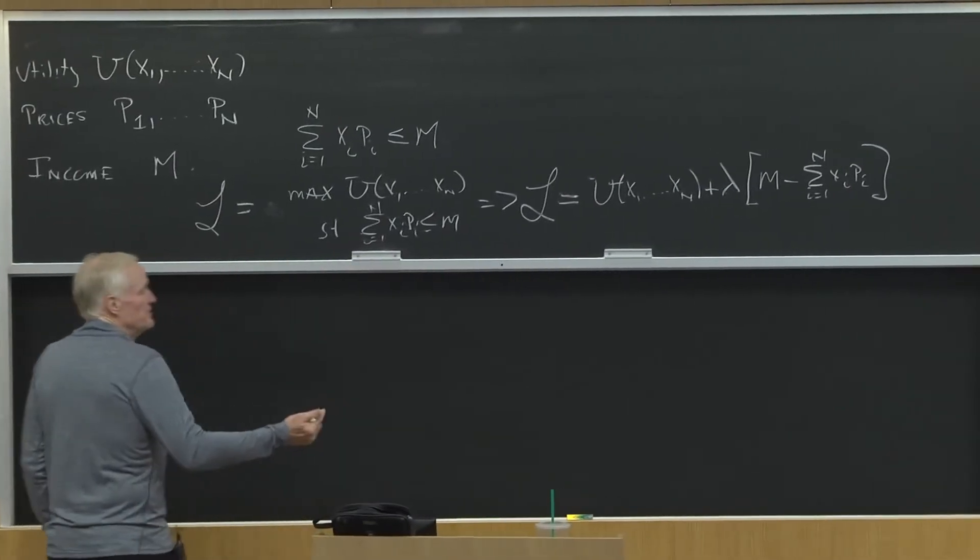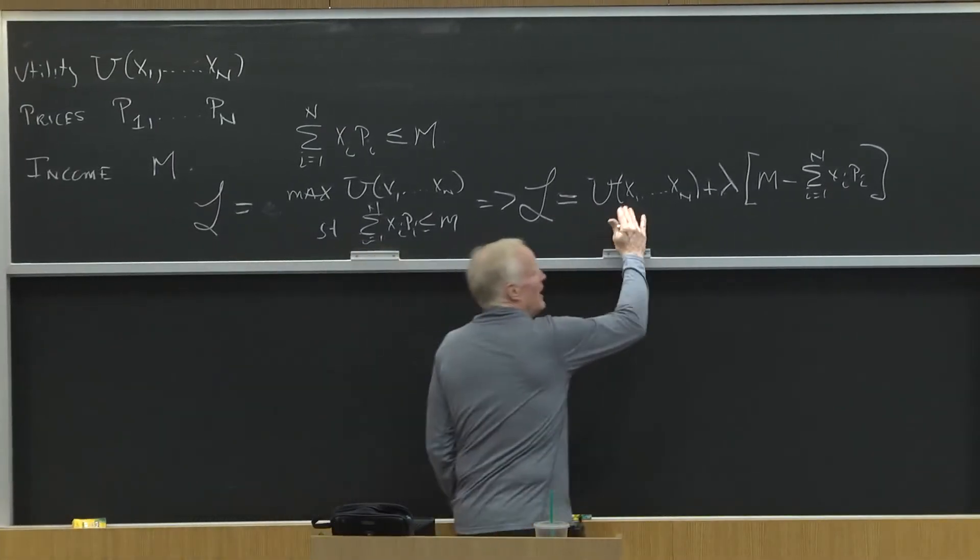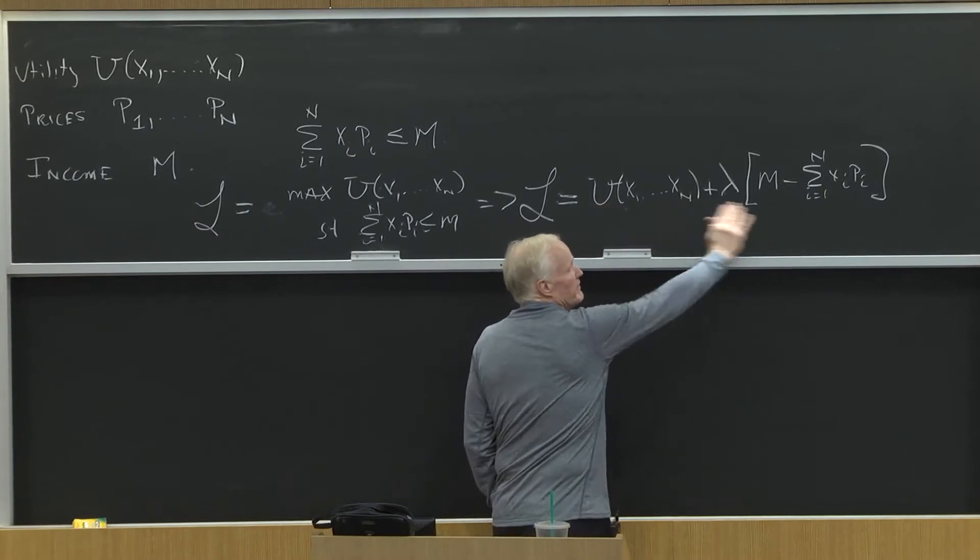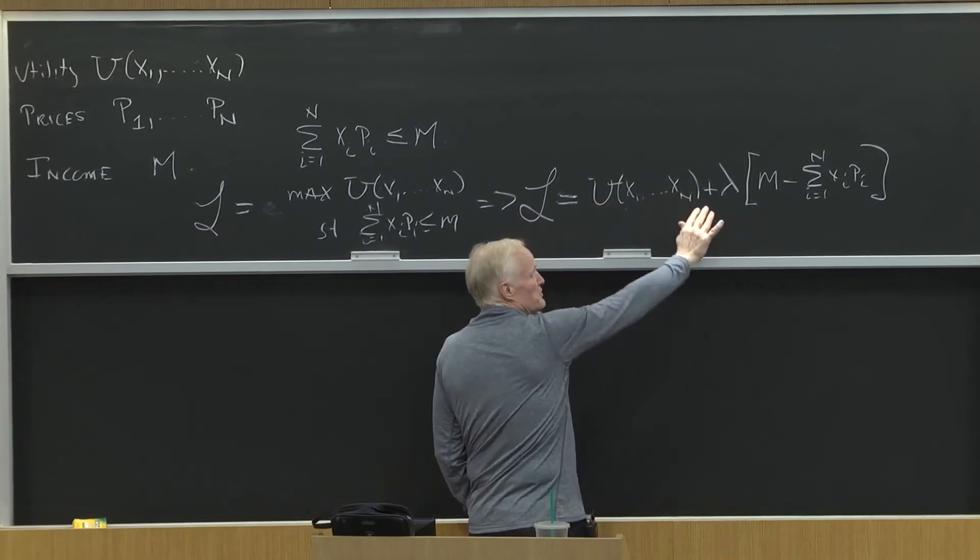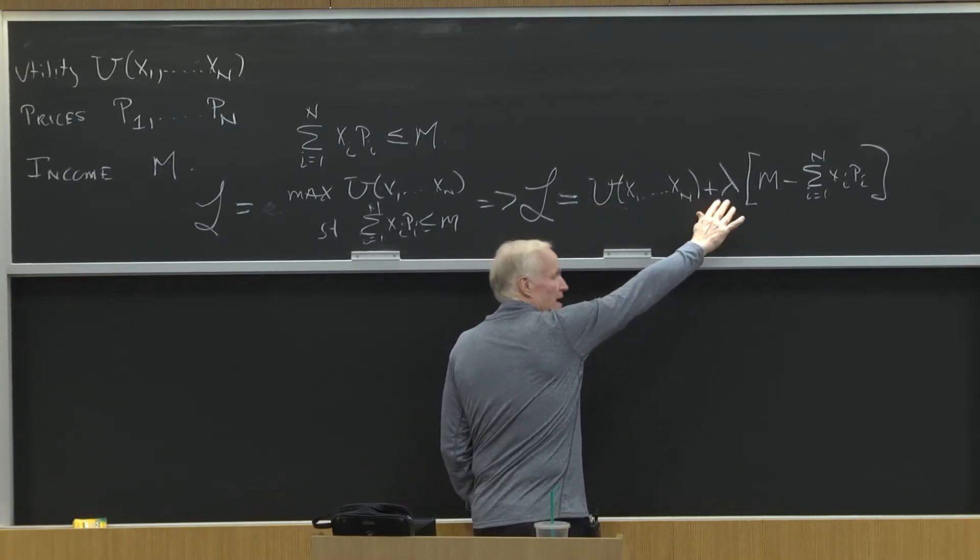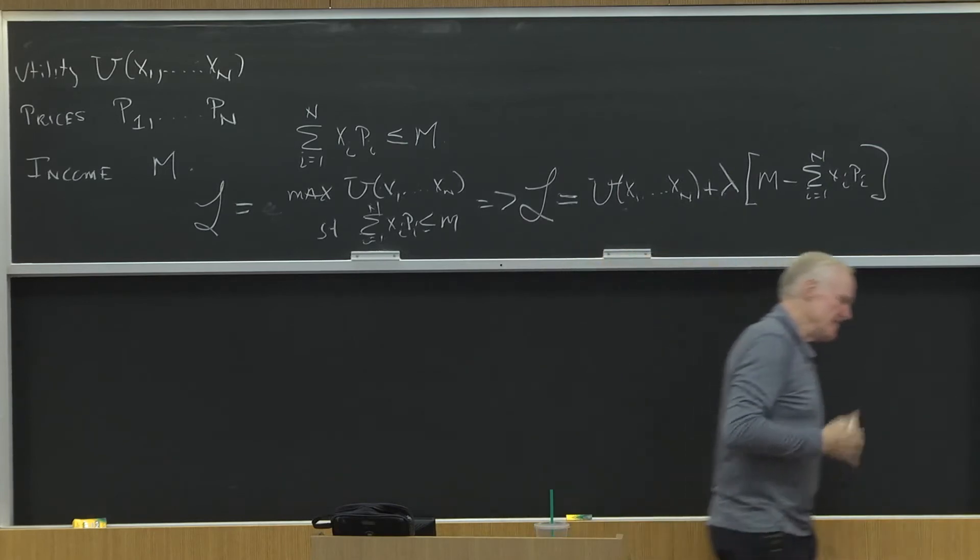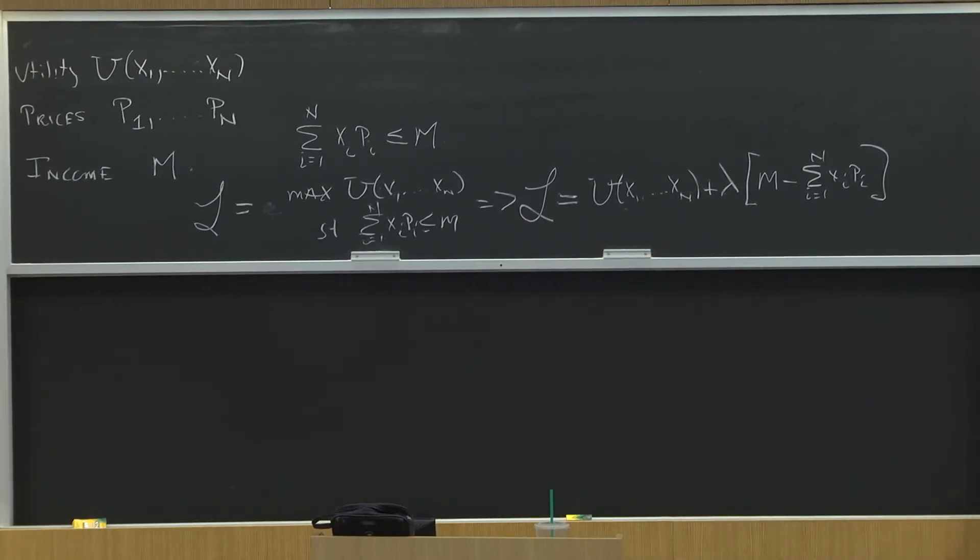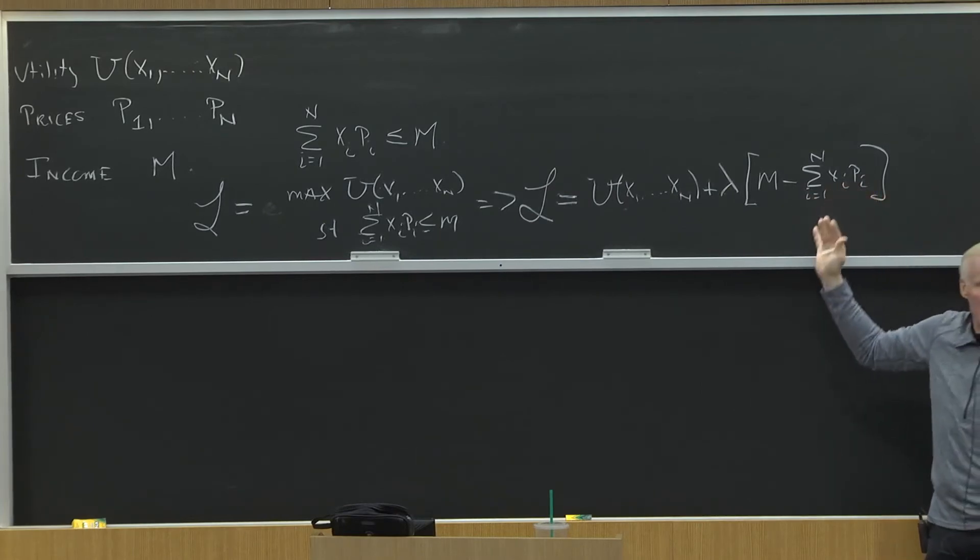So the first-order conditions, you solve this problem by taking the derivatives of this Lagrangian with respect to each of the x's and with respect to lambda. You're not really maximizing the Lagrangian. For those of you coming from mathematics, this is really what's called a saddle point, but it's the same idea.